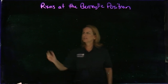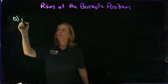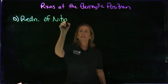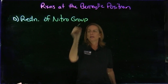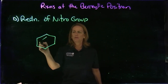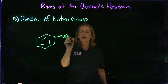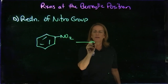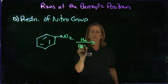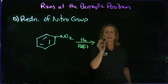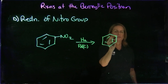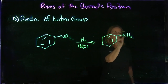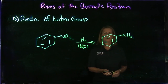The last reaction is the specific reduction of a nitro group directly attached to a benzene. If we have nitrobenzene, catalytic hydrogenation works very well, and that will convert the nitro group into an amino group. We'll learn later that we can do something with the amino group, so this is a handy reaction to note.